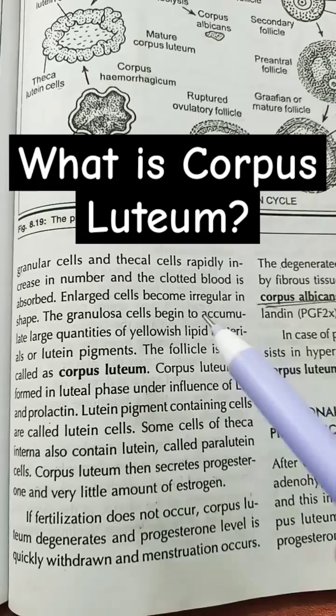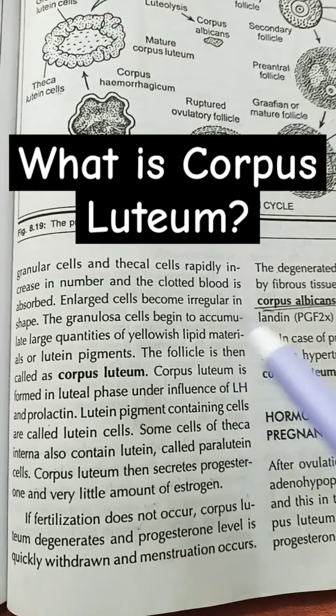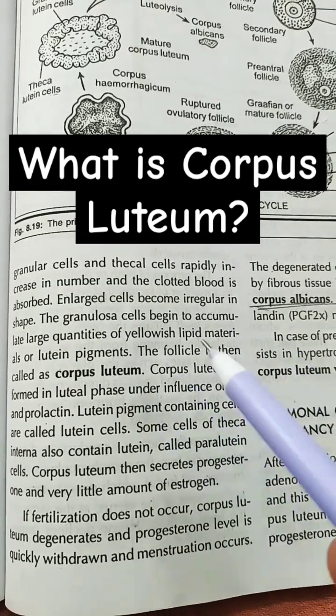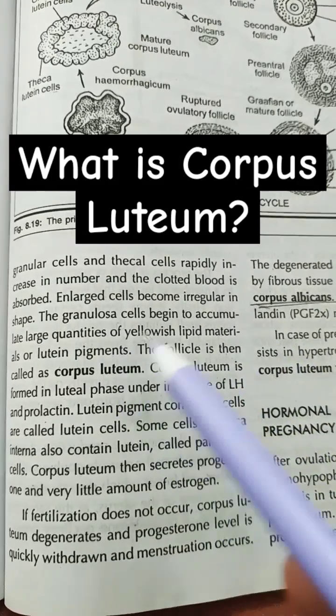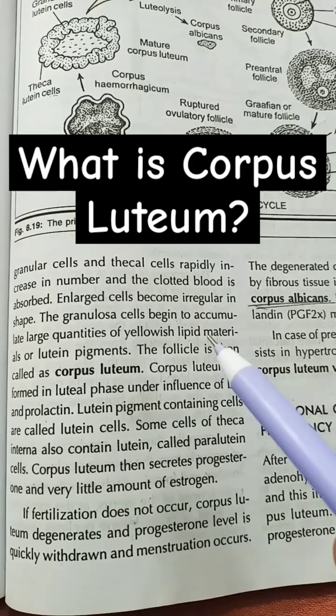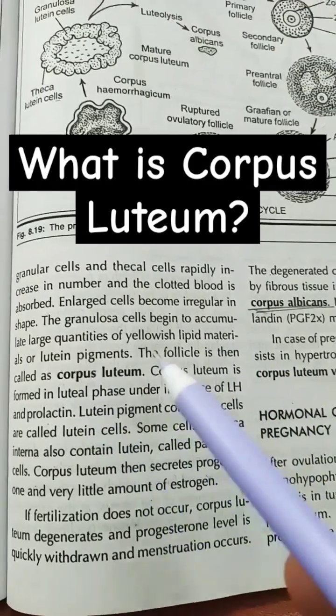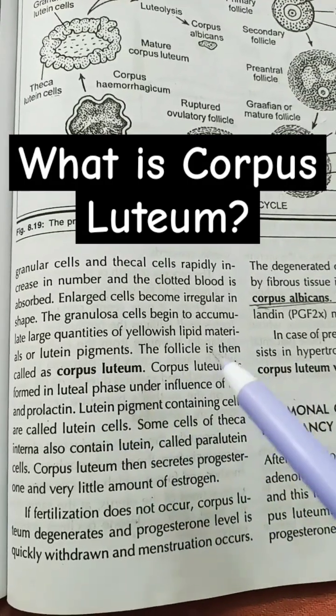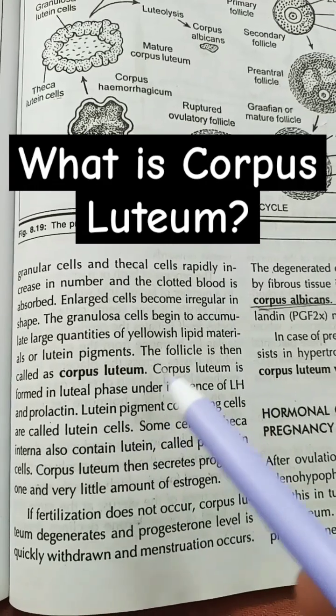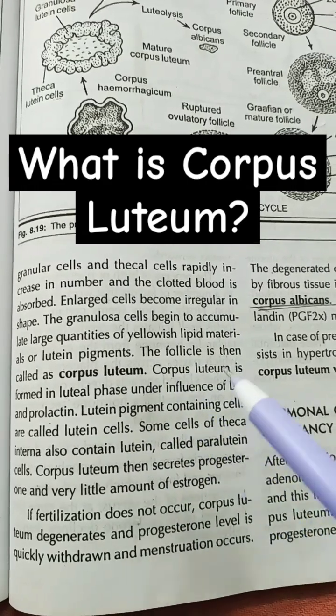Enlarged cells become irregular in shape. The granulosa cells begin to accumulate large quantities of yellowish lipid materials, or lutein pigments.